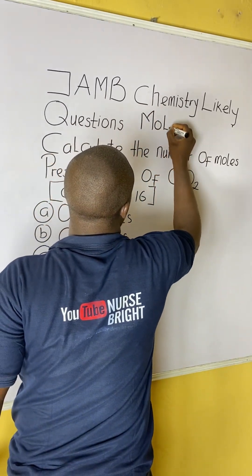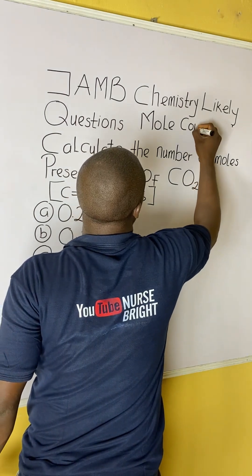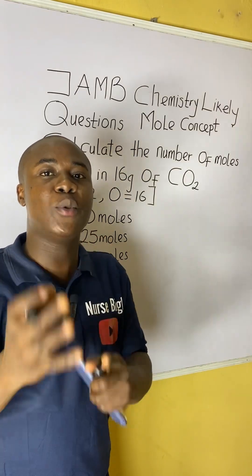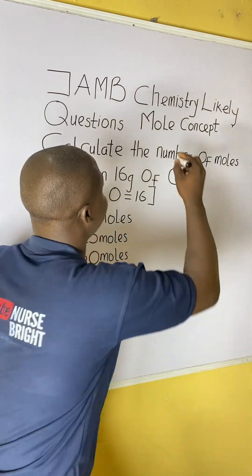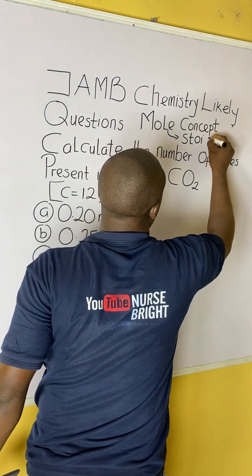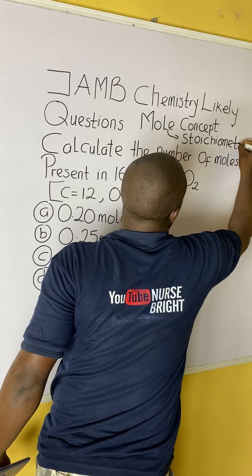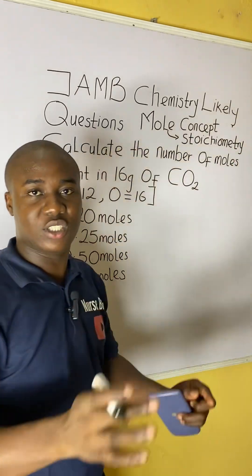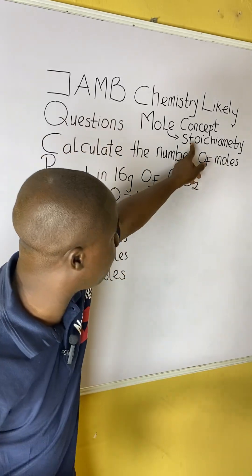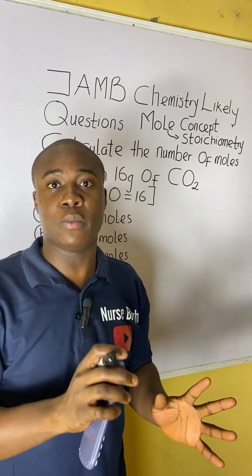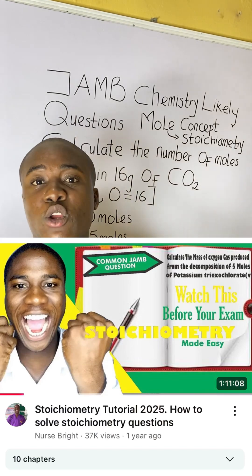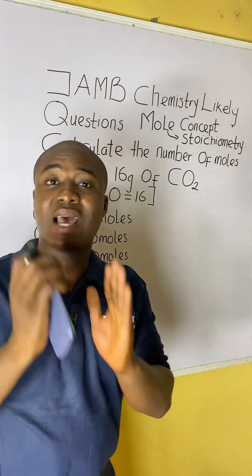That aspect is simply called the mole concept. Having a proper knowledge of the mole concept will help you solve questions on another very important aspect in chemistry called stoichiometry. Both aspects are very key in the JAMB exam. I have two video lessons that explain this topic called stoichiometry, so make sure you go watch those lessons — they explain everything you must know about solving questions like this.